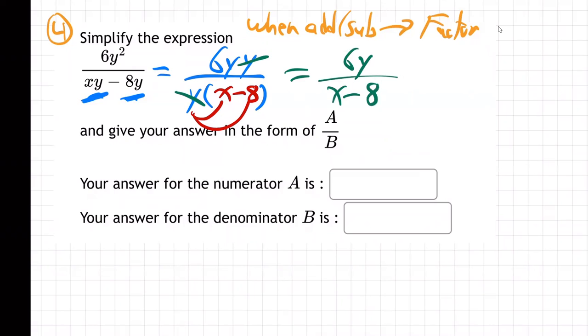You don't need the parentheses anymore around the x minus 8 on the bottom, because there's nothing to separate it from anymore. The y that was in the front is gone. So that's our answer: 6y over x minus 8. They want you to put A for the numerator, B for the denominator.